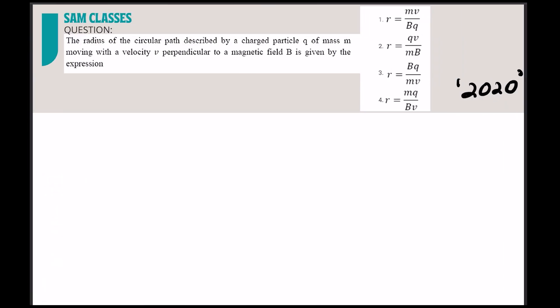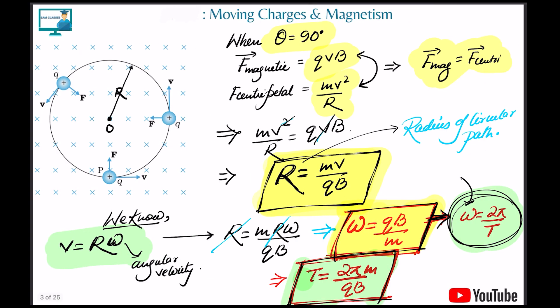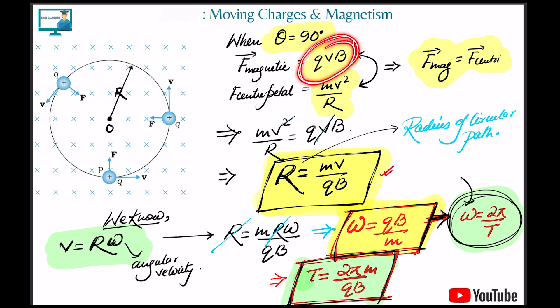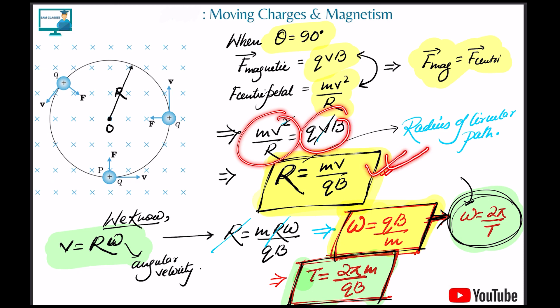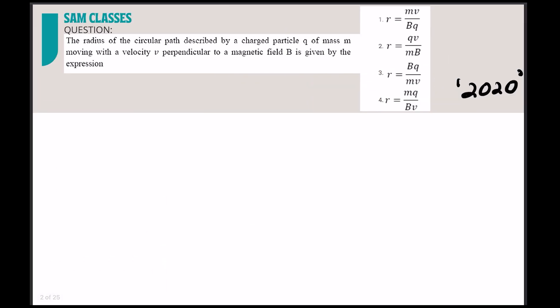The first question from 2020: the radius of the circular path described by a charged particle of mass m moving with velocity v perpendicular to a magnetic field. The radius formula is r = mv/qb. We derived it by equating centripetal force mv²/r to magnetic force qvb, giving r = mv/qb.